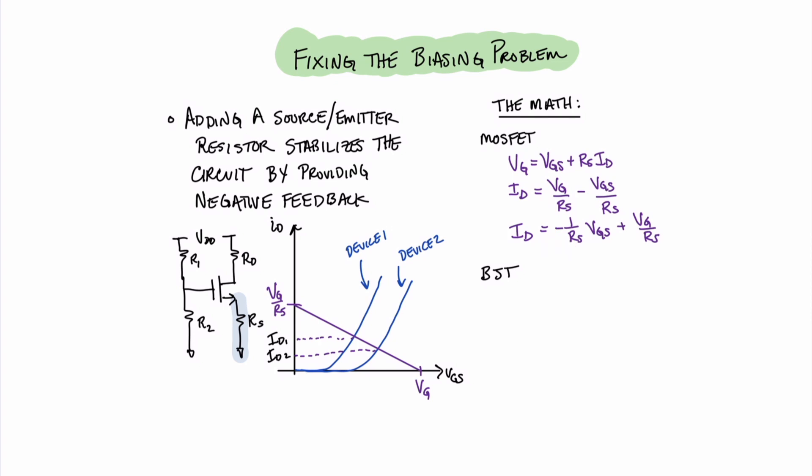For a bipolar junction transistor circuit, we find a very similar result. We can write that IE equals VBB minus VBE divided by the quantity of RE plus RB over beta plus 1. In the case of the BJT, VBE is our variable. And because now we're dividing by this emitter resistor, we find that we have stability in our emitter current because of the addition of the emitter resistor, much in the same way we did for the MOSFET circuit.